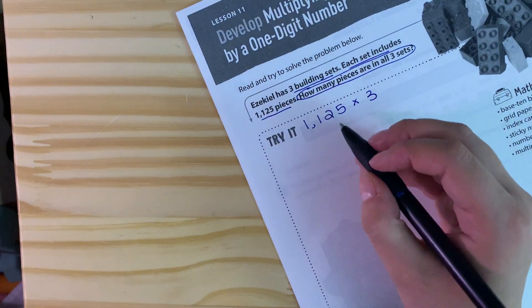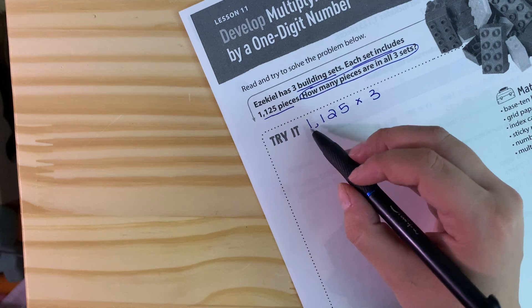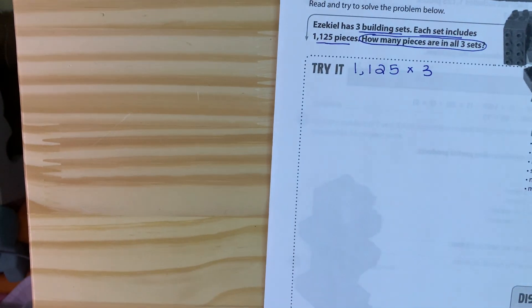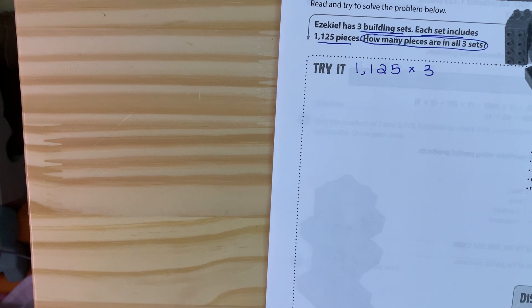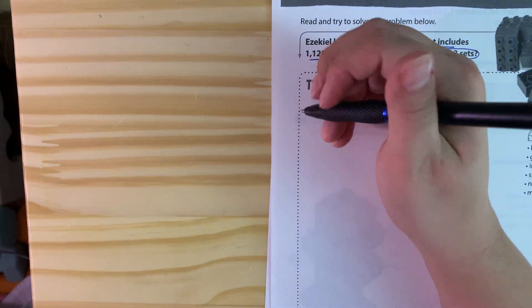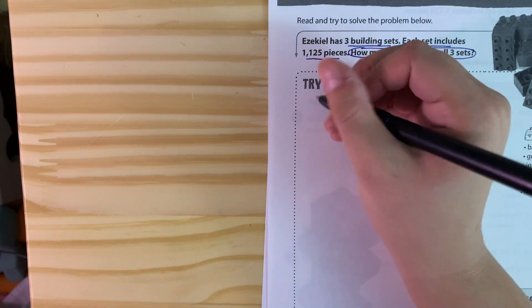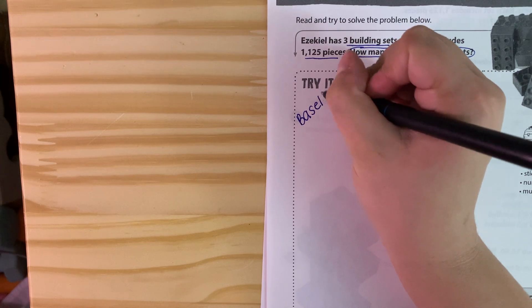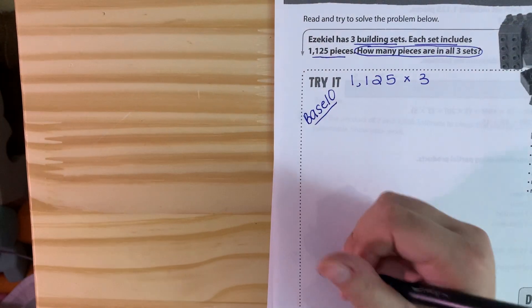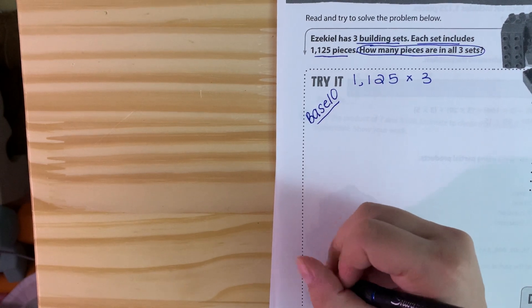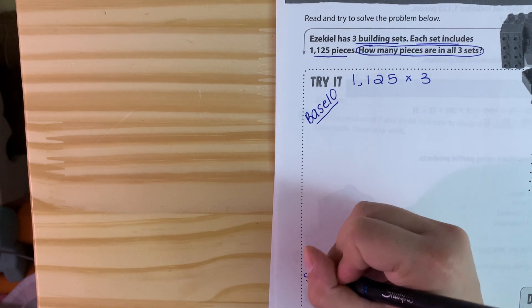This looks a little more scary from yesterday just because we have a number in the thousands place, but the strategies we talked about yesterday still work. I'm going to start off by drawing a picture because with the thousands I feel like that just is better to start off with.